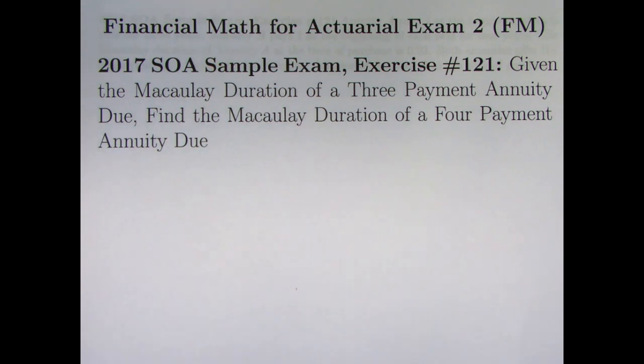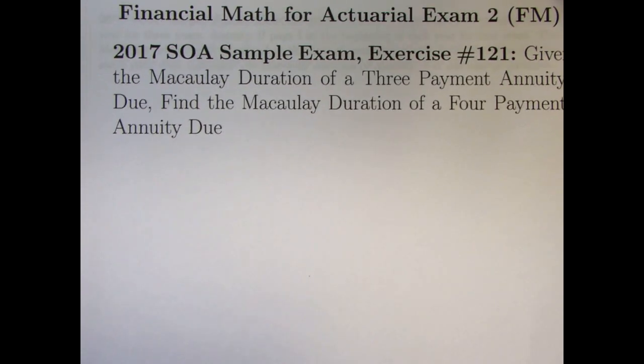Given the Macaulay duration of a three-payment annuity due, we want to find the Macaulay duration of a four-payment annuity due. Now, you might be scratching your head and wondering why the emphasis on the number of payments and these are annuities due instead of annuity immediates. Well, it's basically because it makes the problem easier to solve, and we'll see that as we solve the problem.